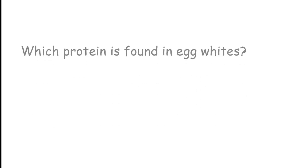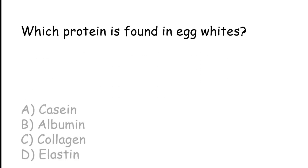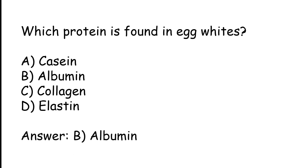Which protein is found in egg whites? Options: casein, albumin, collagen, elastin. The correct answer is option B: albumin is the protein found in egg whites.